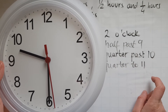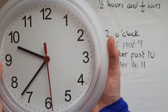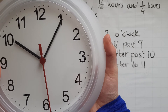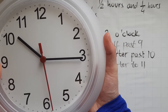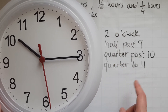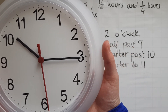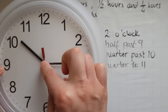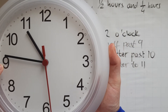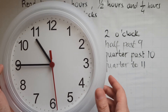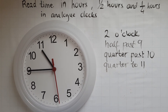Quarter past ten — it is ten o'clock but quarter past. This is ten o'clock, now quarter past, quarter an hour past ten, on the three. And finally quarter to eleven — it needs quarter an hour to get to eleven. We are on ten already and it's not eleven yet, but it's got just quarter an hour to go. Quarter — and that's it. Not eleven yet, it needs quarter an hour to get to eleven o'clock. So this is how to read time in hours, half hours and quarter hours in analogue clocks.